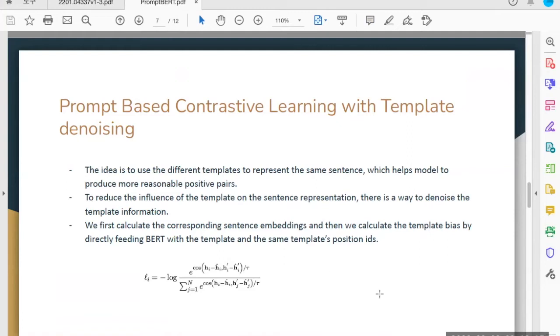The idea is to use different templates to represent the same sentence, which helps the model produce more positive pairs. In order to reduce the influence of templates on sentences, there's a way to denoise the information. We first calculate the corresponding sentence embeddings, and then we calculate the template bias by directly feeding BERT with the template and same template position IDs. Here's a formula for that.